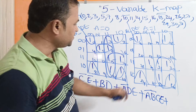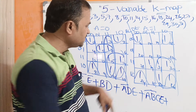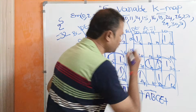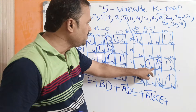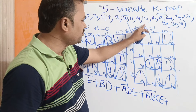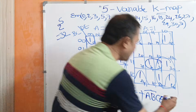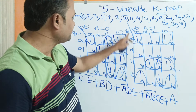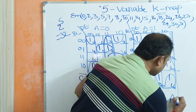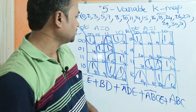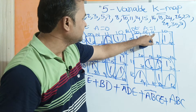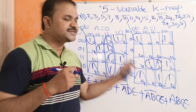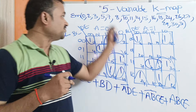Now let us see the second map. Here we need to cover this remaining cell. The only way is by combining these two cells as a group. This group belongs only to this corner of the second map. Here A value is 1, so we write A. The BC combination is 1,1 meaning BC. The DE combination 0,1,1,1 — the second one being common is E. So we get the minterm ABCE. This is the simplified expression for this problem.